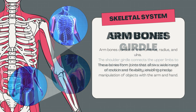The lower leg bears weight and articulates with the femur at its superior end and the tarsals at its inferior end. The foot bones consist of tarsals, metatarsals, and phalanges. There are seven tarsal bones: 1. Calcaneus, 2. Talus, 3. Cuboid, 4. Navicular, 5. Medial cuneiform, 6. Middle cuneiform, and 7. Lateral cuneiform.